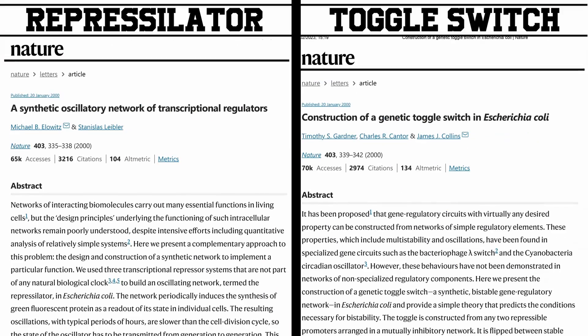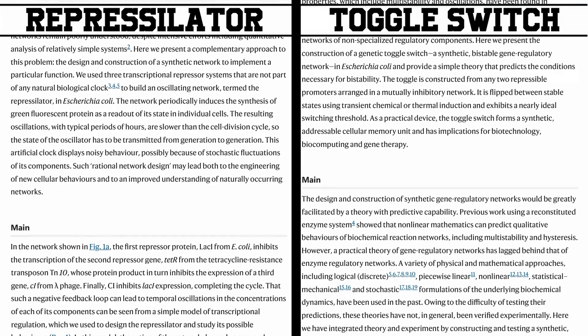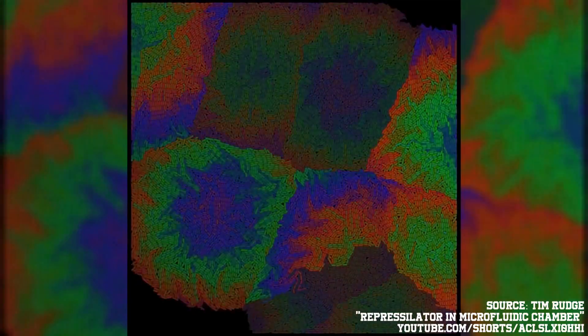Coming to the year 2000, the papers on the repressulator and the toggle switch were published. The repressulator in particular is an amazing piece of research where the authors were able to take E. coli and make it fluoresce, then stop fluorescing and turn different colors over time. That was a landmark because it was the very first time that we as humans put together a biological circuit that does a new thing from scratch.